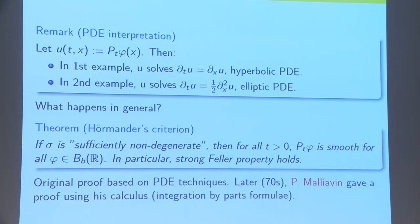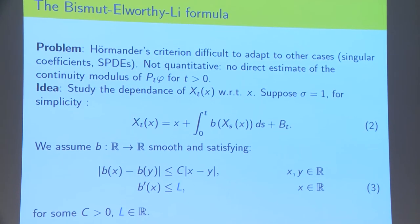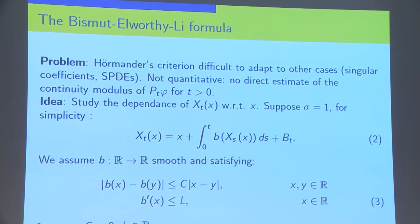What happens in general, for general coefficients? We have very sharp criteria. For example, Hörmander's criterion, which says that if σ is sufficiently non-degenerate, in some sense, then for all T strictly positive, P_T of φ will be smooth for any φ which is Borel. In particular, Strong-Feller property holds. But what I'm interested in is for some quantitative versions of the Strong-Feller property.